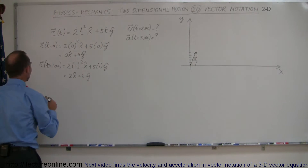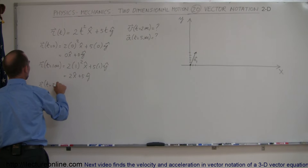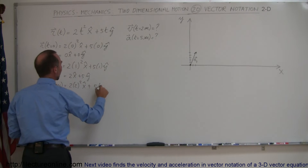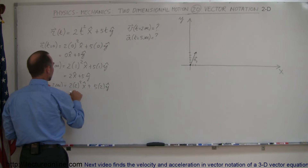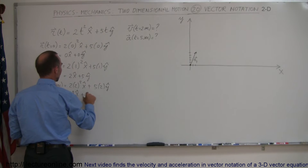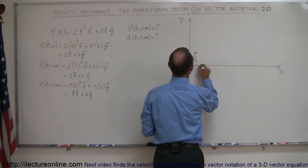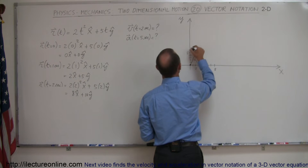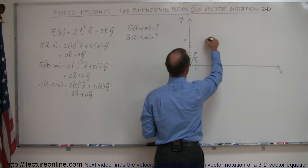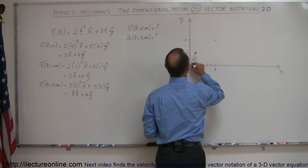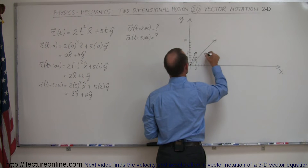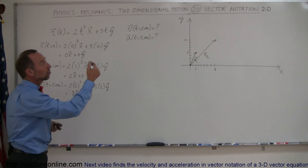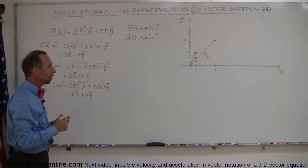Now let's find where the object is at t equals 2 seconds. That's equal to 2 times 2 squared in the x direction plus 5 times 2 in the y direction, which equals 8 in the x direction plus 10 in the y direction. We can graph that and draw the vector from the origin to that point. We call this r₂, indicating the position of the object at t equals 2 seconds — that's where it's located relative to the origin.